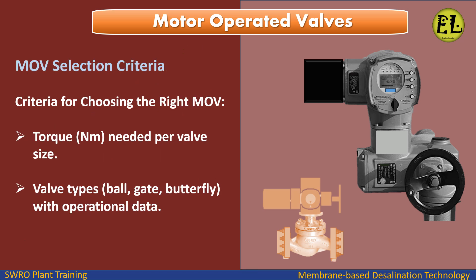MOV selection criteria include the torque in Newton-meters needed per valve size and the valve type — such as Ball, Gate, or Butterfly — along with relevant operational data.